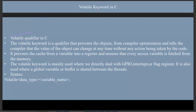The volatile keyword is a qualifier that prevents the object from compiler optimization and tells the compiler that the value of the object can change at any time without any action being taken by the code. So, the value of that object or variable can be changed at any time without any action being taken by the code.